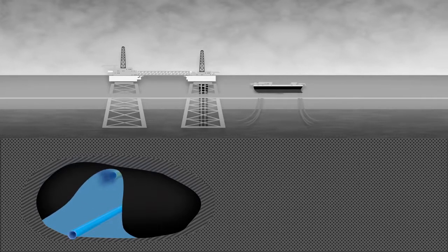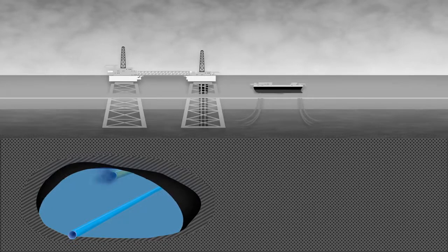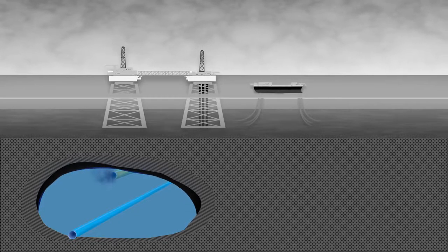The polymers essentially bunch up and, like a squeegee, push individual oil droplets together into oil banks that are swept toward production wells.